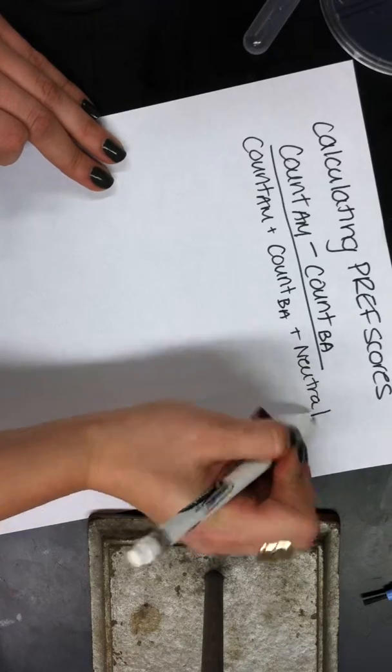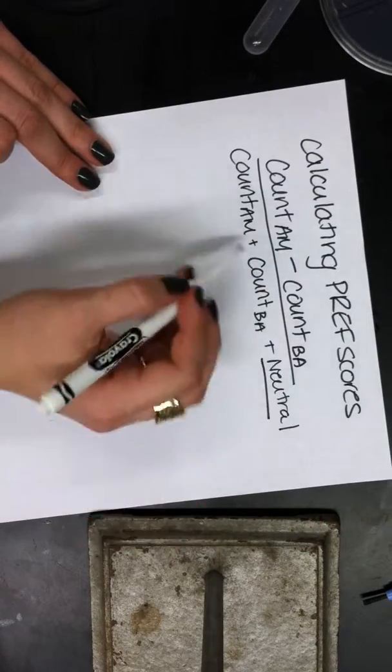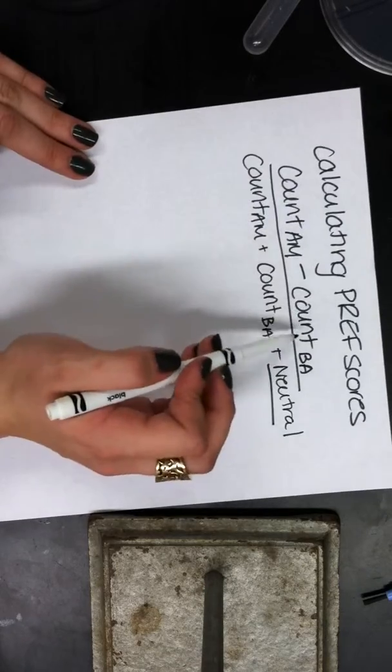So if any stay on the line, they'll count it as neutral. So it's really count AM minus count BA over total.